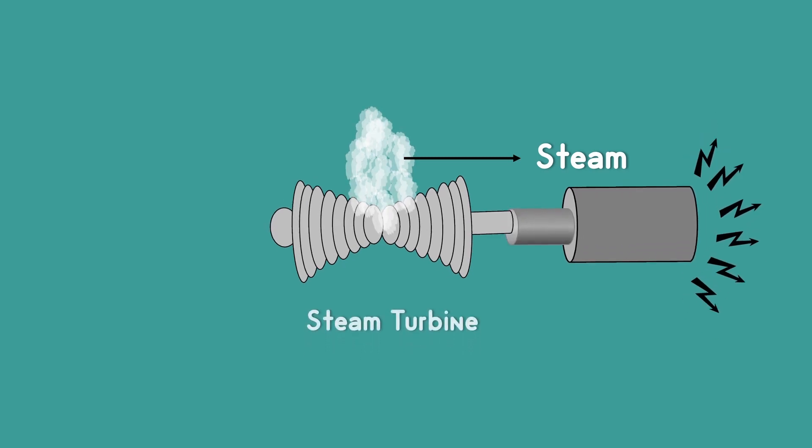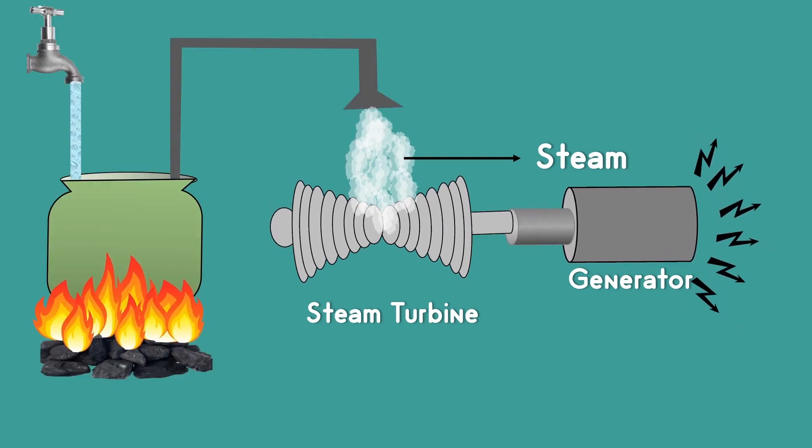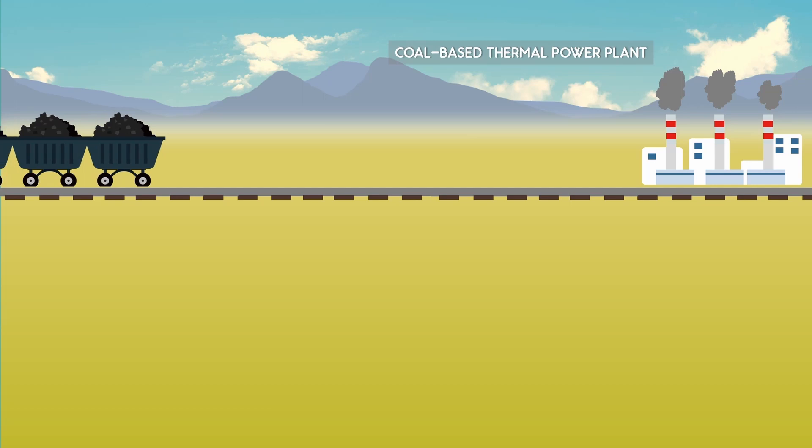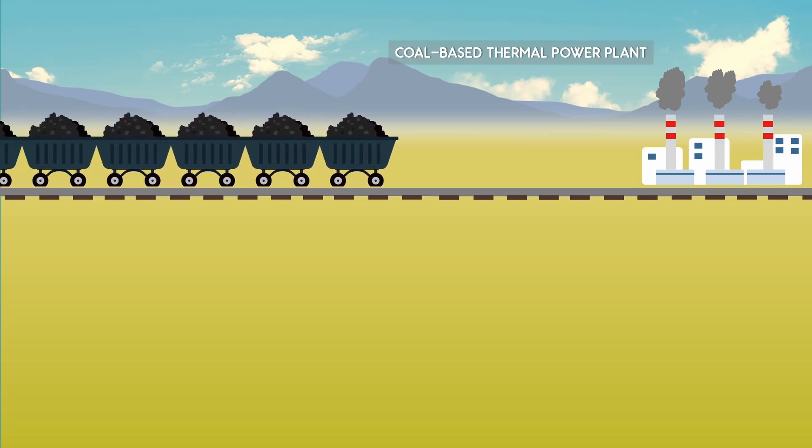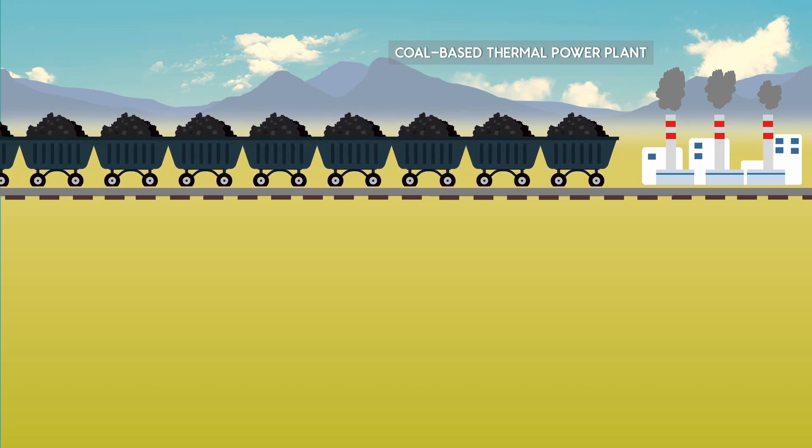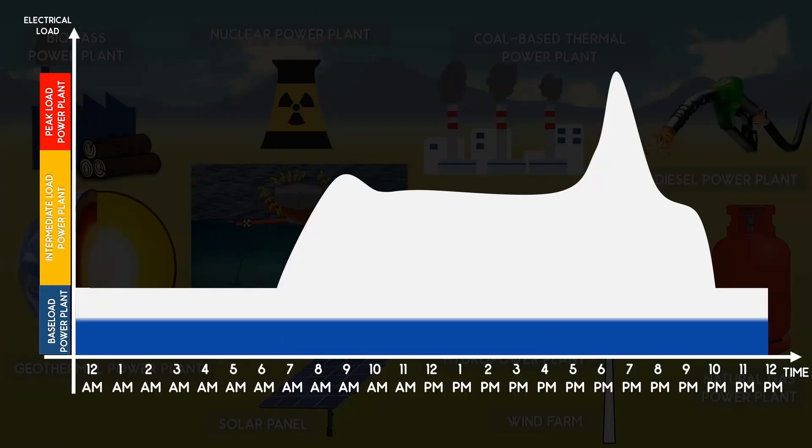Coal-based thermal power plants use steam to generate electricity. When steam is given as the input, the turbine spins and the generator generates electricity. To produce steam, water is boiled by burning coal. If we have a good stock of coal, we can generate continuous power. Therefore, coal-based thermal power plants are normally used as base load plants.